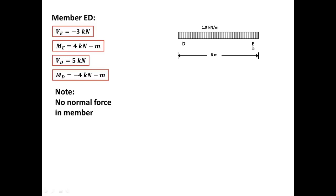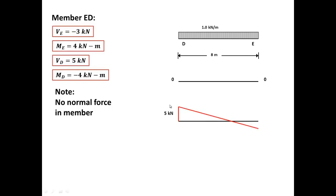These are the values we got for member ED. At E we have a shear of minus three and a moment of four. At D we have a shear of five and a moment of minus four, and we have no normal forces, so the normal force diagram will be blank. For the shear force diagram, we start on the left with five kilonewtons. That's the value VD. Then we go straight down because we have a distributed load pushing us downwards, one kilonewton per meter.